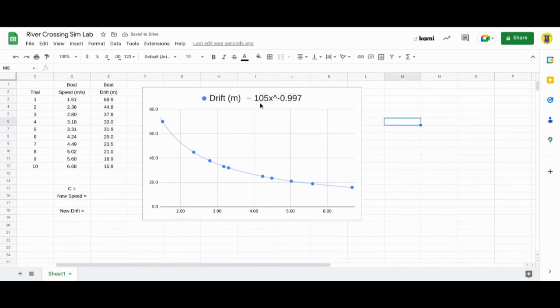If I were to write this out from my equation, I would write y equals 105 divided by x. The x is being raised to a negative 0.997, which is essentially being raised to a negative 1.